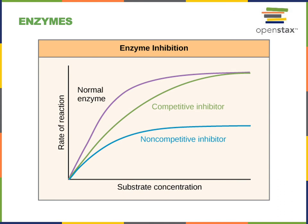In contrast, a non-competitive inhibitor is a molecule that binds to a different location on the enzyme known as the allosteric site. Increasing the substrate concentration will increase the reaction rate of a solution containing a non-competitive inhibitor; however, at very high substrate concentration, a solution with a non-competitive inhibitor will not reach the same Vmax as the solution without the inhibitor. This is because the non-competitive inhibitor binding to the allosteric site inactivates the enzyme, preventing it from catalyzing the chemical reaction even though the active site may still be able to bind substrate.